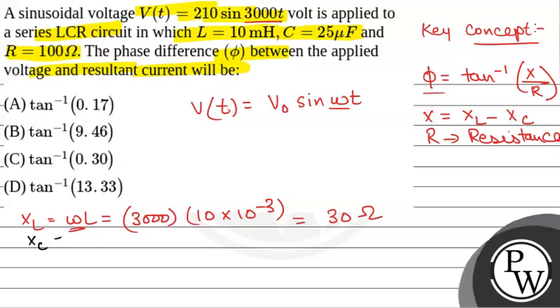Then, the capacitive reactance will be calculated as 1 over omega C. That will be equal to 1 over omega, which is 3000, and C is 25 microfarad, or 25 times 10 to the power minus 6 farad. On calculating, we get 40 over 3 ohm. So this will be XC.